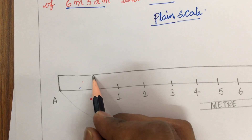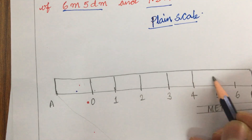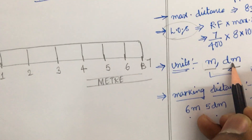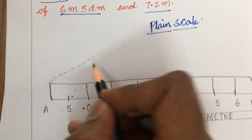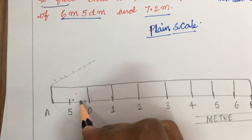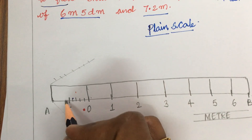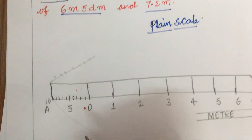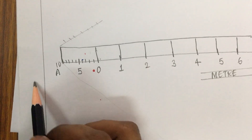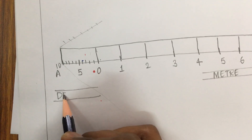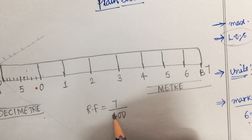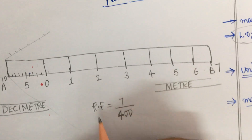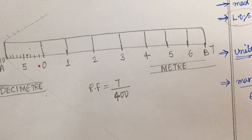From 0 to the left, we have one box reserved for the decimeter scale. Since 1 meter equals 10 decimeters, divide this one box into 10 equal divisions. Label them: 6, 7, 8, 9, 10 — this represents the decimeter scale. Do not forget to write the RF exactly at the center of the scale, and also indicate whether it is a full-size, enlarging, or reducing scale, as failing to do so will cost marks in the examination.